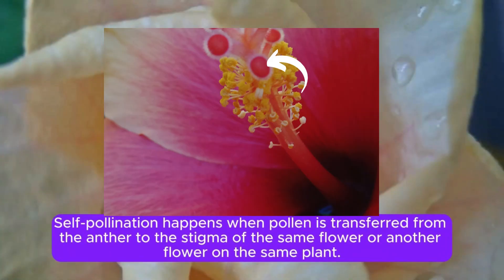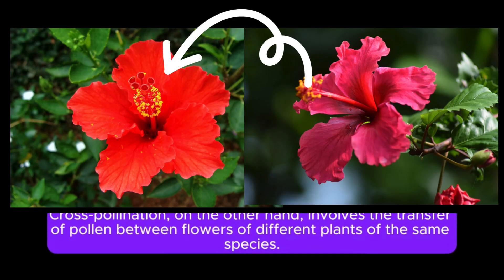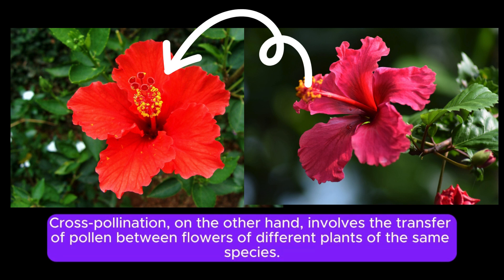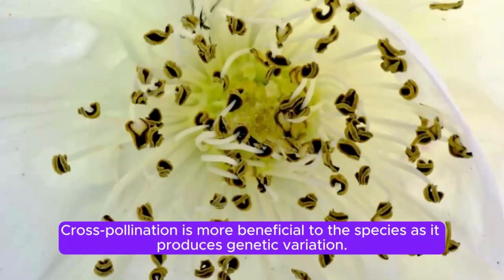Self-pollination happens when pollen is transferred from the anther to the stigma of the same flower or another flower on the same plant. Cross-pollination, on the other hand, involves the transfer of pollen between flowers of different plants of the same species. Cross-pollination is more beneficial to the species as it produces genetic variation.